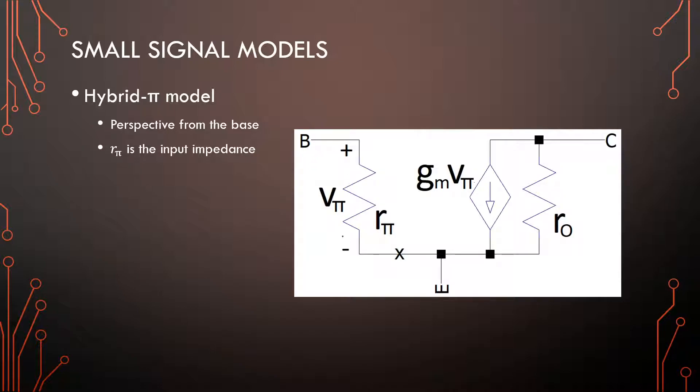So, the hybrid pi model is an input resistance with V_pi across it, and V_pi controls the current source. So that's a transconductance, and in parallel with the current source is its output impedance. So you can just straightforward replace the transistor with this model, that being the base, the emitter, and the collector. We will mainly use the hybrid pi model. There are places where I will use emitter resistance, r_e, but the model that I use will still be the hybrid pi model, because you can convert between the two models.